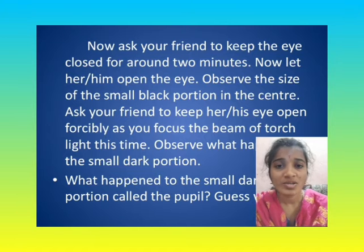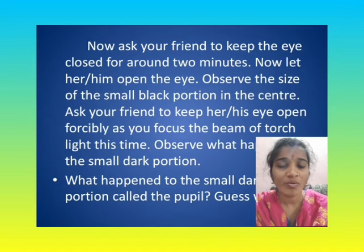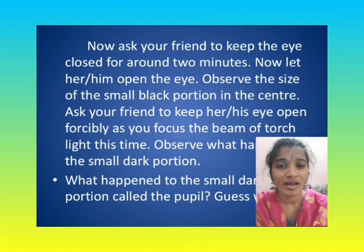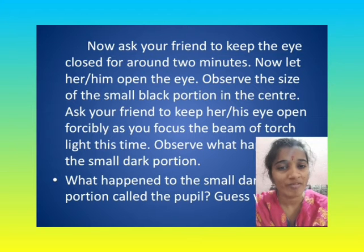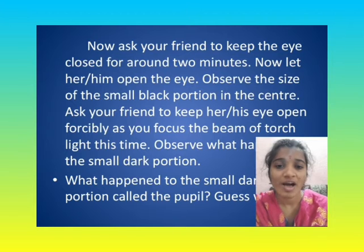Now ask your friend to keep the eye closed for around two minutes, then let her or him open the eye. Observe the size of the small black portion in the center. Ask your friend to keep her or his eye open forcefully as you focus the beam of torch light. What happened to the small dark portion called the pupil? Guess why?